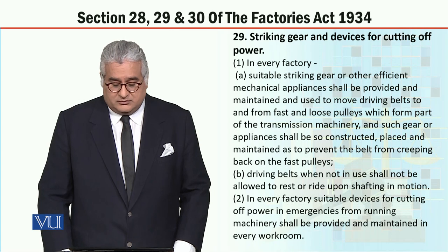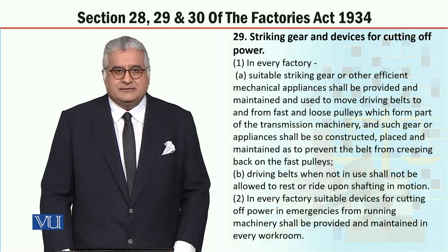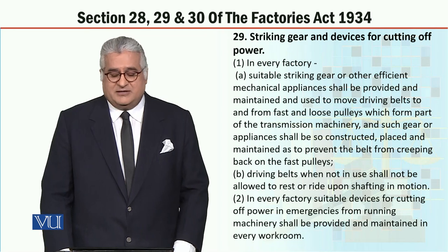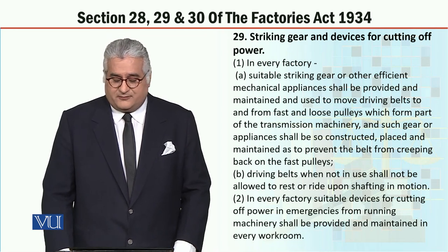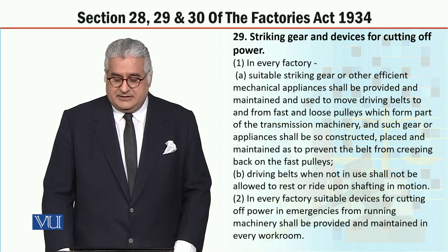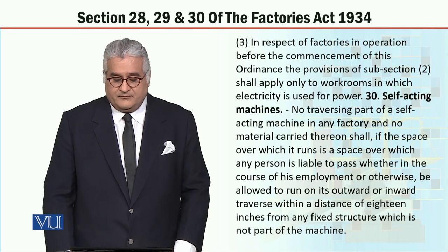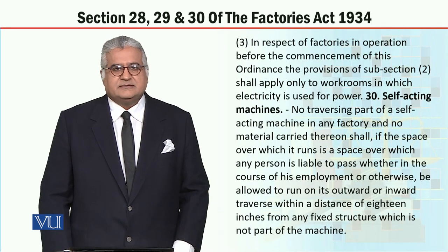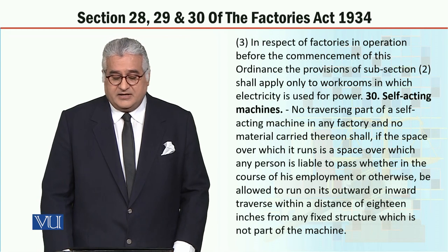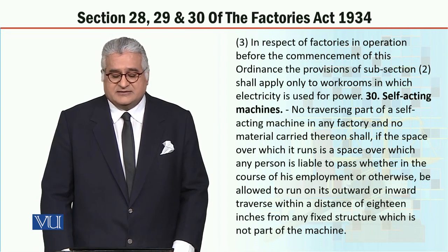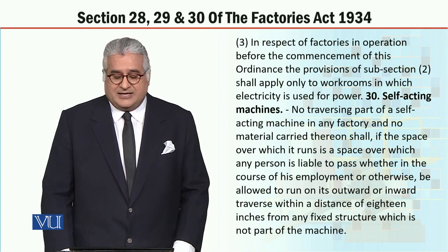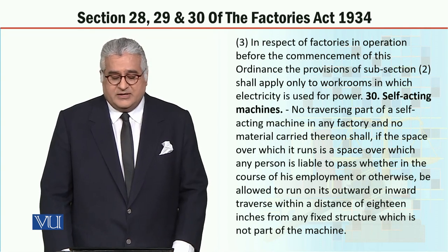Subsection 2 of section 29: In every factory, suitable devices for cutting off power in emergencies from running machinery shall be provided and maintained in every work room. Subsection 3: In respect of factories in operation before the commencement of this ordinance, the provisions of subsection 2 shall apply only to work rooms in which electricity is used for power.